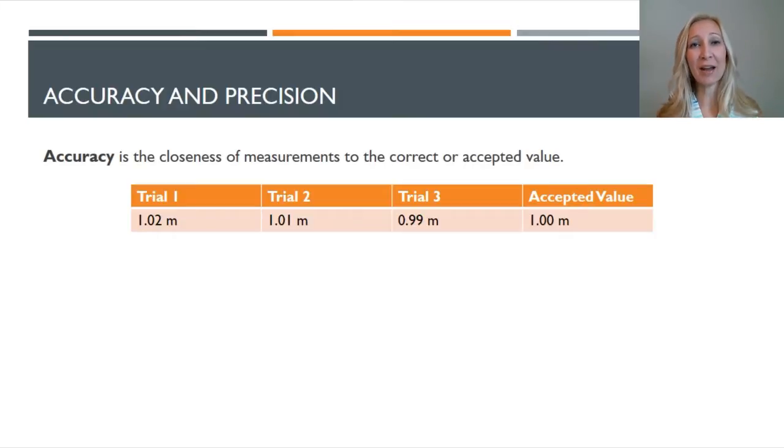So take a look at this table. We are measuring the length of a table and the actual length is 1.00 meters. For trial 1, you get 1.02 meters. For trial 2, you get 1.01 meters. And for trial 3, you get 0.99 meters. Now none of these is 1.00 meters, but if we average them, they come close to 1.00 meters. So this is a very accurate experiment because your average is close to the accepted value.